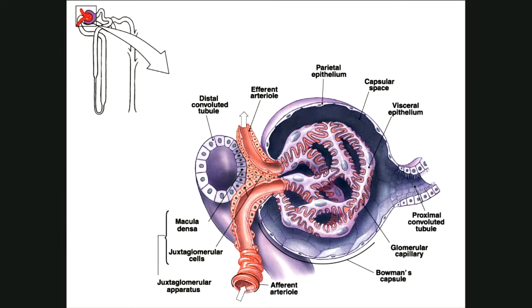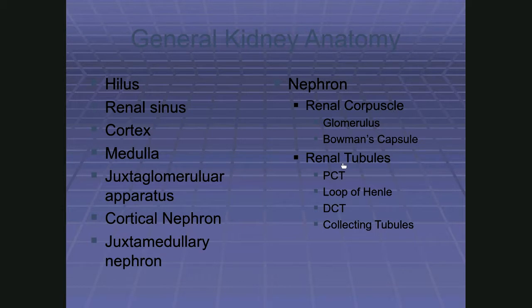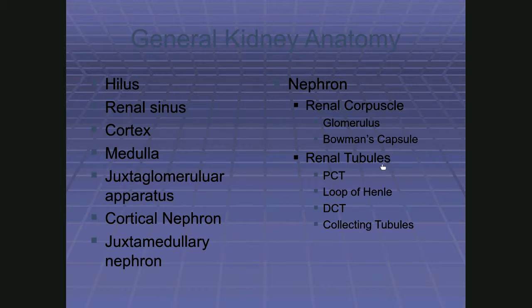The renal corpuscle is the head of the snake. The fluid that comes out of the glomerulus, gets caught inside Bowman's capsule, and enters the renal tubules is called filtrate. The renal tubules adjust filtrate to produce urine — they take what comes out of the glomerulus and turn it into the waste product that leaves the body.